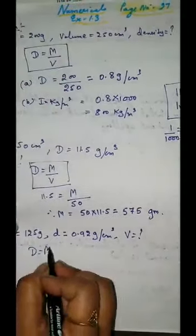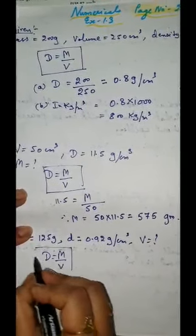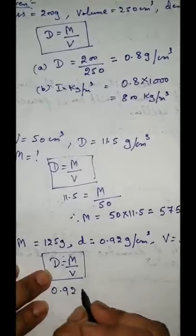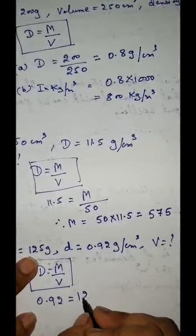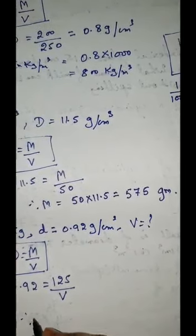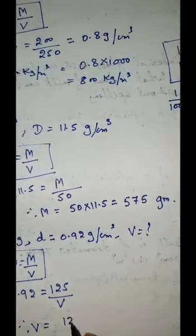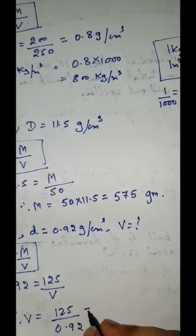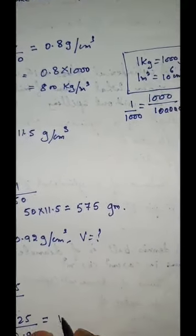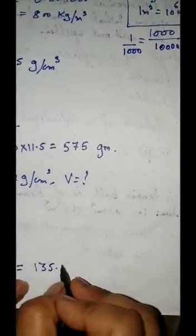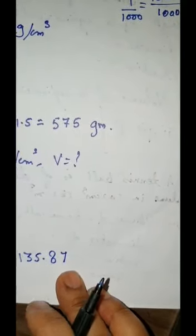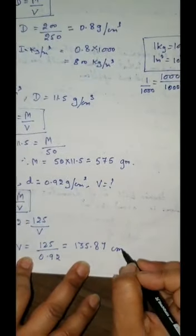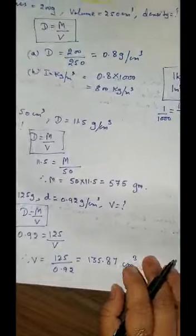Density of ice is given 0.92 gram per centimeter cube. We have to find volume. The same formula: density is equal to mass upon volume. Put the value — density 0.92 is equal to mass 125 by volume. Therefore volume is equal to 125 by 0.92. When you do the calculation it will come 135.87. Now coming to the unit — this is volume, volume is given in centimeter cube, so your unit will be centimeter cube.